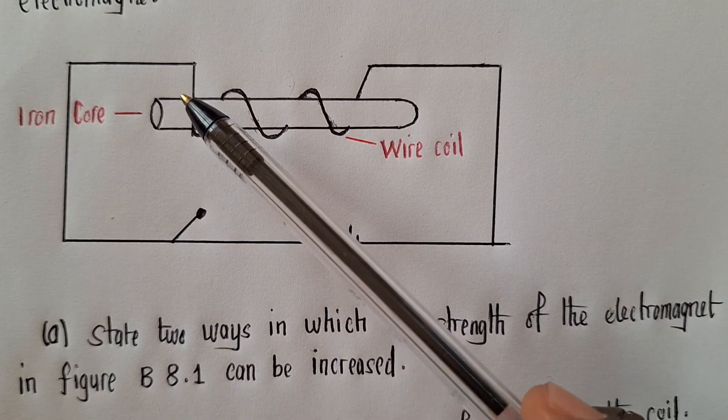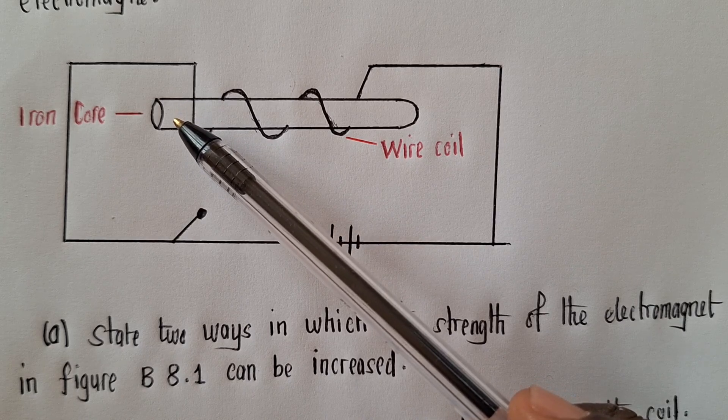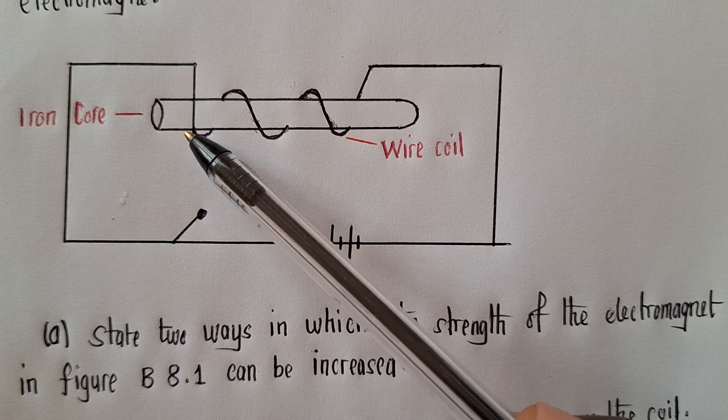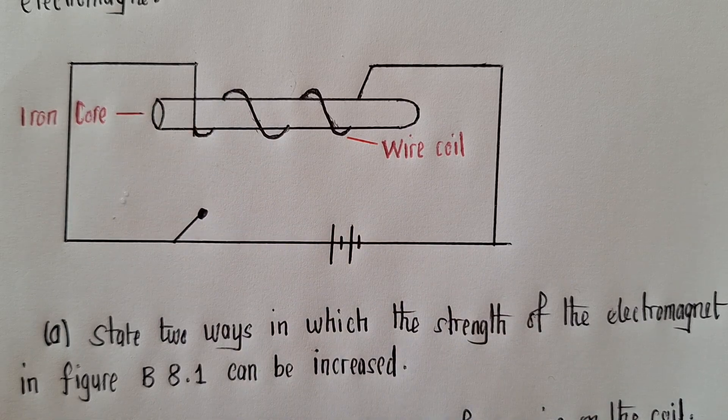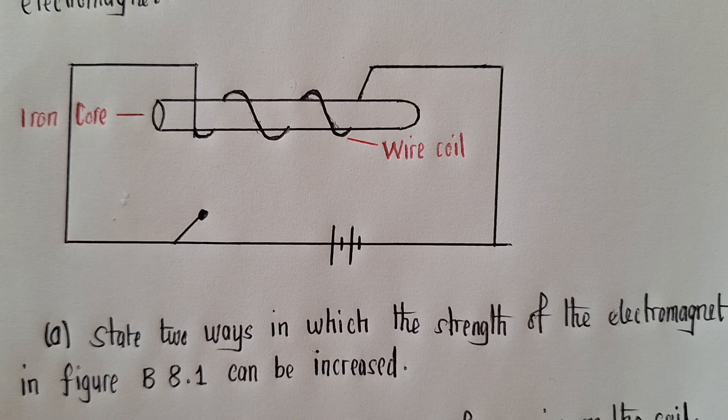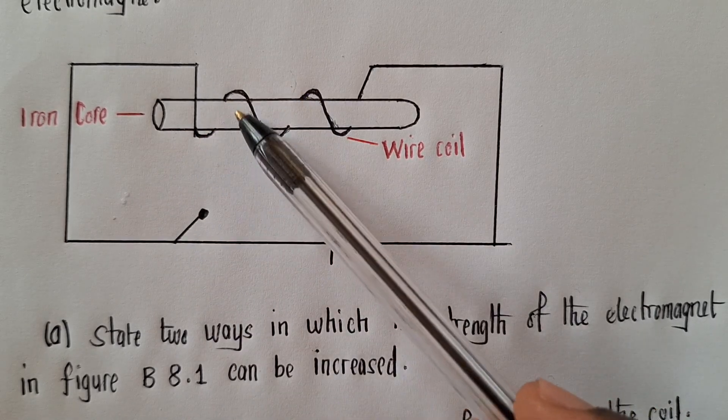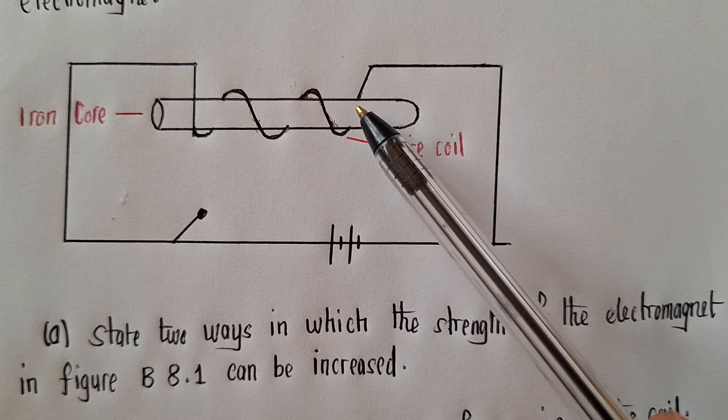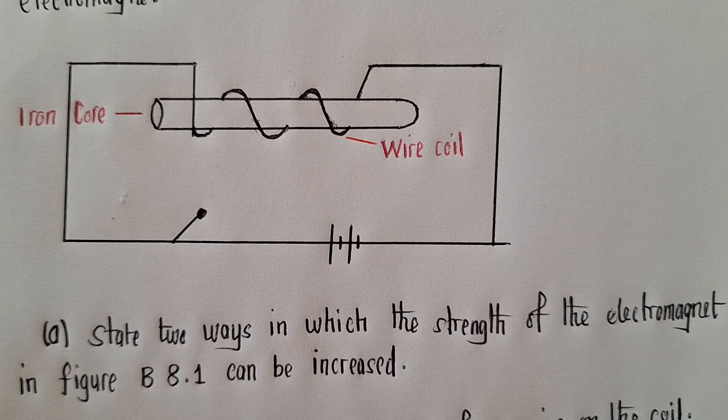So one way will simply be to increase the number of these turns. Can you see the turns here? So the turns, when they are increased, the magnetism will also increase. That's how it works. So you can see how many do we have here? There are about three - one, two, three. So if you increase, let's say we take it to 10.